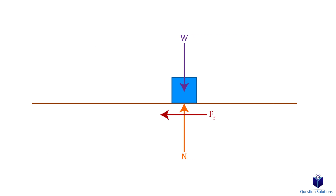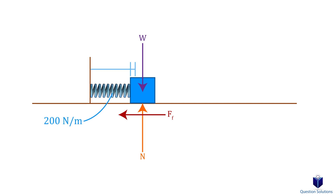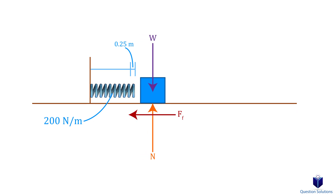Another thing to consider about work is when it involves springs. Let's add a spring with a stiffness of 200 newtons per meter to our example. Say our box started with the spring compressed 0.25 meters. Since it's compressed, the spring tries to come back to equilibrium by pushing the box to the right. This does positive work, and the work done by the spring is half times the stiffness times the displacement of the spring squared.